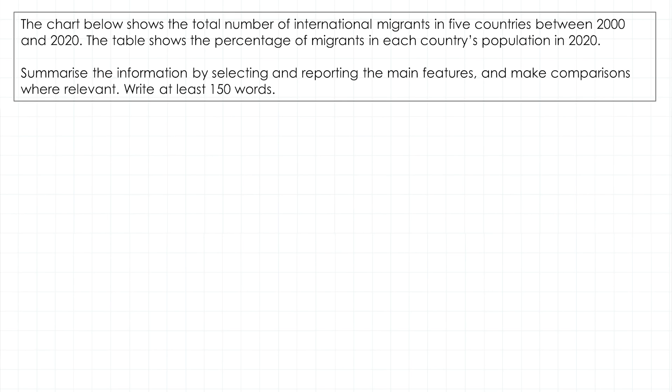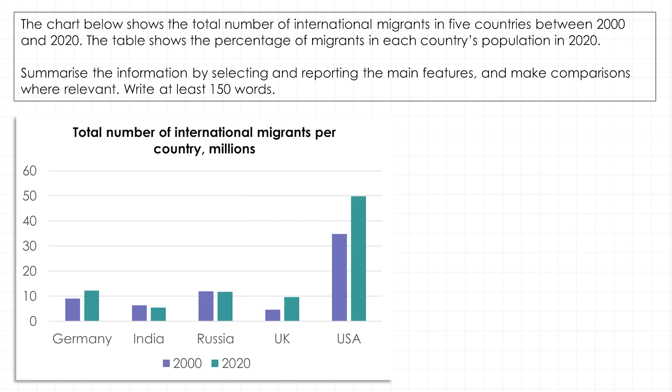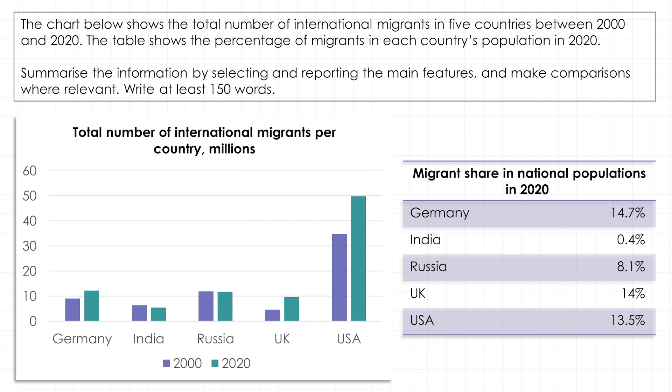First, the task. The chart below shows the total number of international migrants in 5 countries between 2000 and 2020. The table shows the percentage of migrants in each country's population in 2020. Summarize the information by selecting and reporting the main features and make comparisons where relevant. Write at least 150 words. We have a chart and a table. A chart is a bar chart or a bar graph and it shows the total number of international migrants per country in millions.